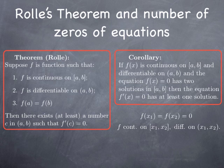So the theorem of Rolle applies to f on the interval [x1, x2], to the effect that the derivative takes a value 0 somewhere between x1 and x2. In particular, it takes a value 0 somewhere, so there is a solution to f'(x) = 0.